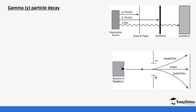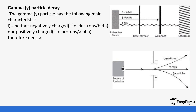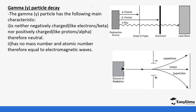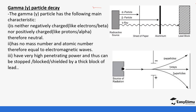Finally, we have gamma particles. Gamma particles are not negatively or positively charged — they are neutral in nature. They have no mass number and no atomic number, so they are equal to electromagnetic waves. They have very high penetrating power and can be stopped by a thick block of lead, as you can see in the setup.